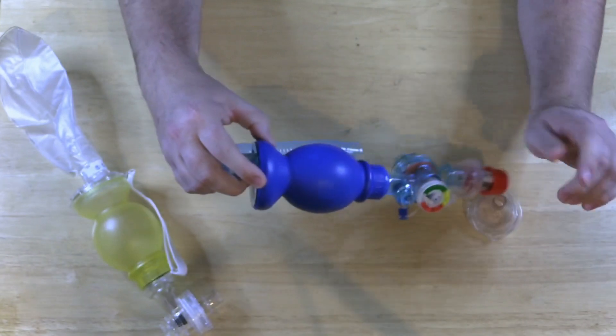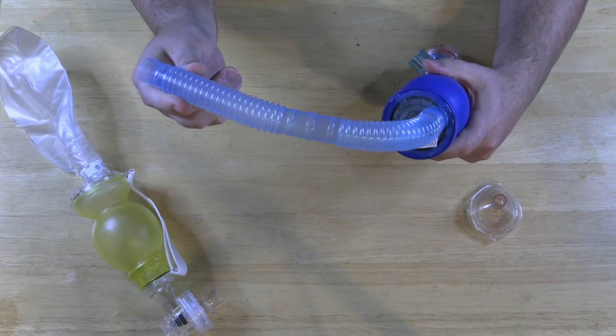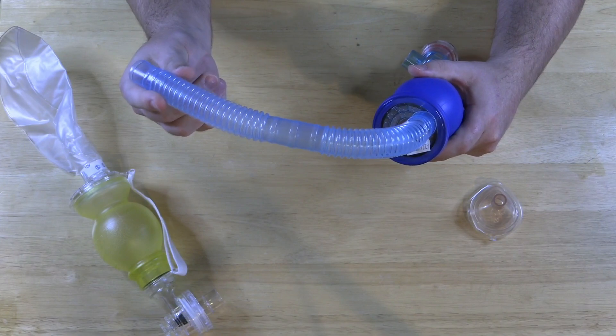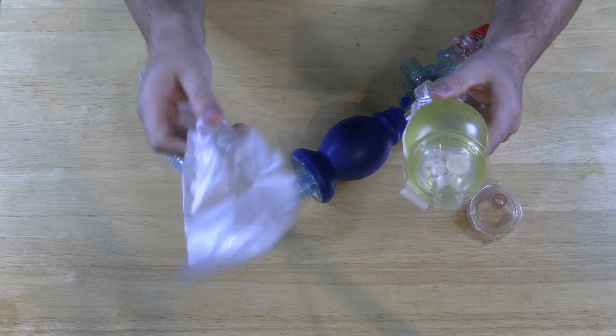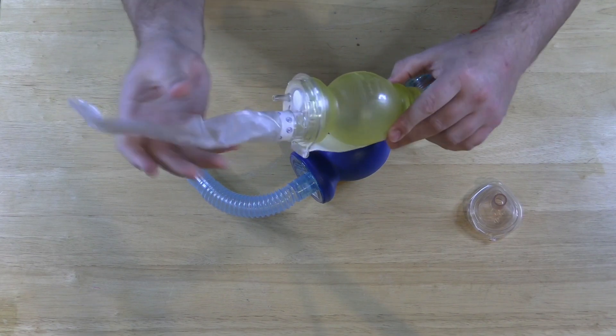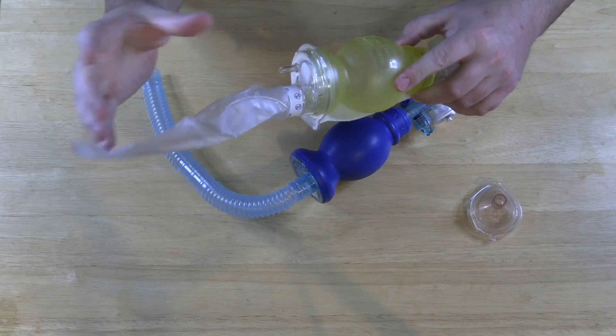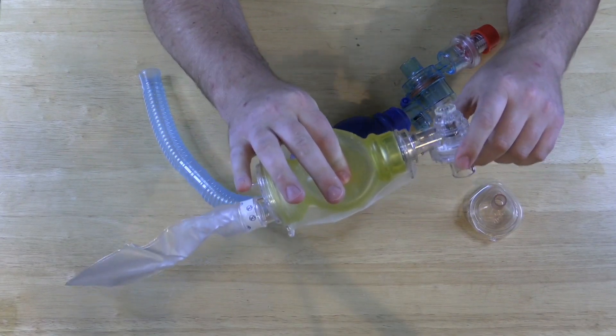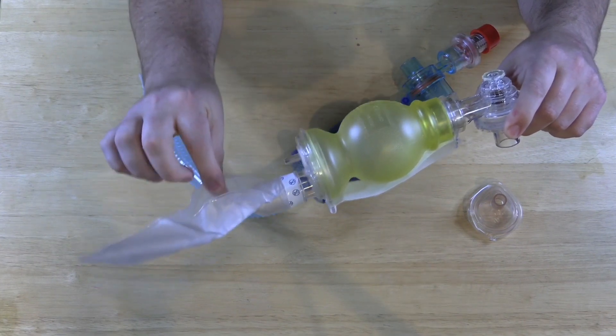Now if we come over to this side of the bag, this is the thing that I don't really like. I'm not too crazy about corrugated tubing as my reservoir bag. I would much rather what we have on this bag. This is an actual reservoir bag here. The point of this is it's going to fill with oxygen. This is what's coming off of my oxygen tree. It's going to fill up and then I'm going to squeeze the bag. I'm going to deliver the breath and then when I let go the bag is going to inflate with the oxygen from this bag.